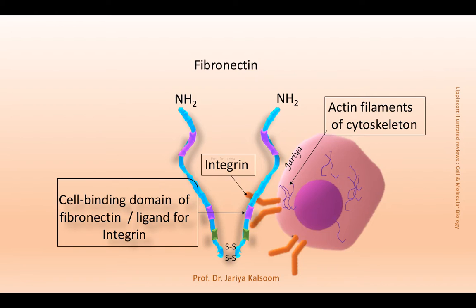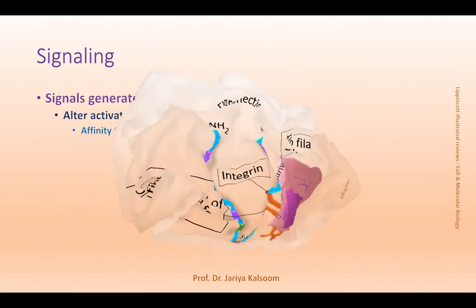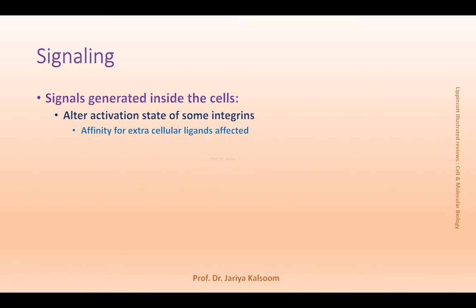When integrins join a cell to ECM, they bind to collagen or fibronectin. The cell-binding domain of fibronectin serves as a ligand for integrin, whereas the intracellular domain binds to the actin filaments of the cytoskeleton. Signals generated inside cells can change the activation state of integrins and their affinity for extracellular ligands or binding proteins. So integrins have the special property of sending signals across the plasma membrane in both directions.